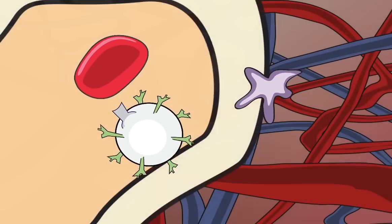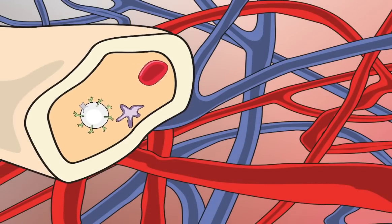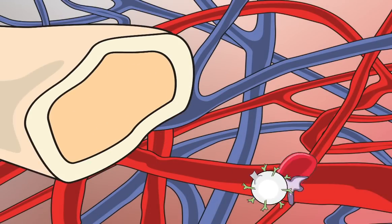Our blood cells reach full maturity in the bone marrow before they migrate to the blood vessels and enter the bloodstream.